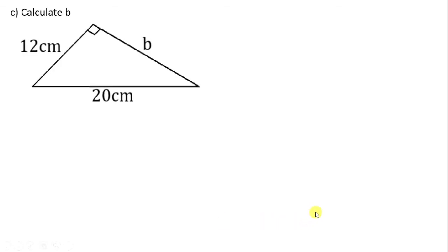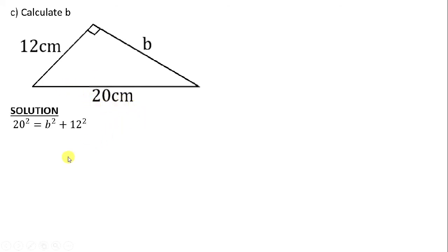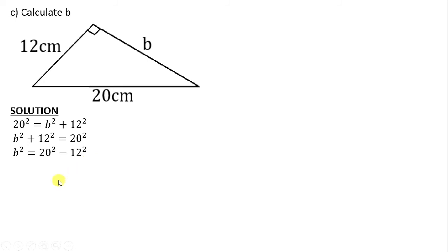Question c says calculate b. When we look at this right angle triangle, our longest side is 20. We state the Pythagoras theorem: 20 squared should be equals to b squared plus 12 squared. We take what is on the right to the left and what is on the left to the right. We transpose the 12 squared — bringing it to the right it will become a negative.